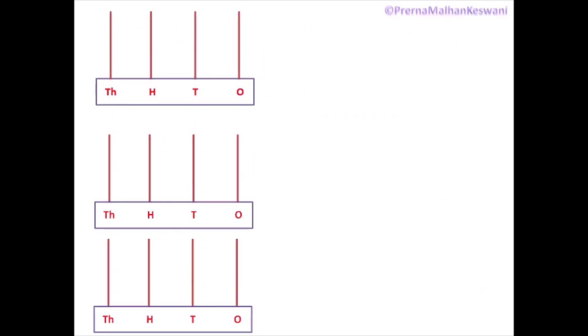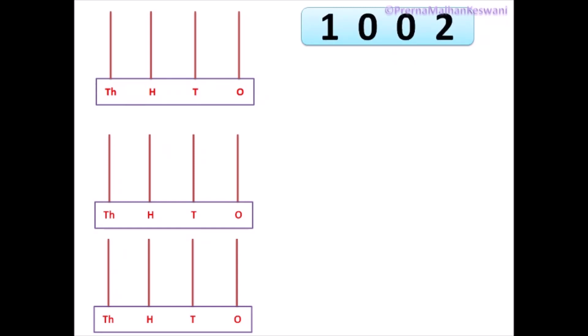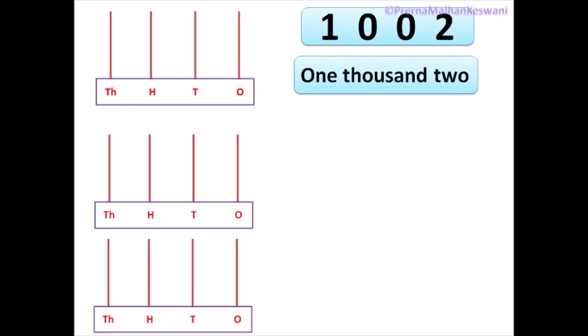Now, think and tell children what comes after 1,001. Yes, you are right — 1,002. And how will it be presented in words? 1,002. Try to make this number on the abacus: 1 in the 1000s place and 2 beads in the 1s place. 100s and 10s places will remain empty because they are 0.